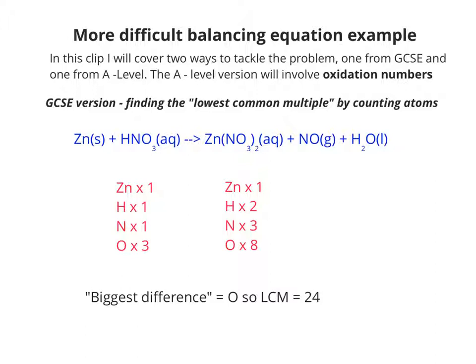So the lowest common multiple of 3 and 8 is 24. So by multiplying HNO3 by 8, I balance my oxygens.